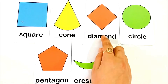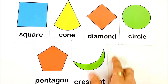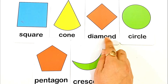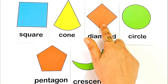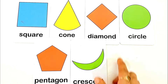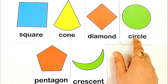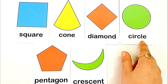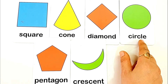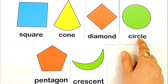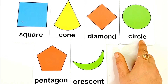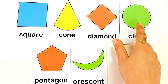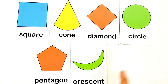D for diamond. D I M O N D, diamond. This is diamond shape. C for circle. C I R C L E, circle. This is circle shape.